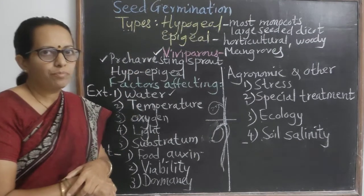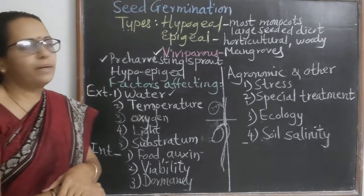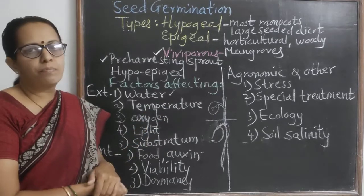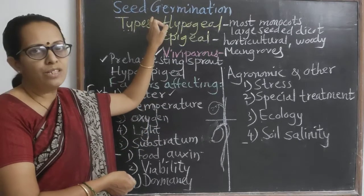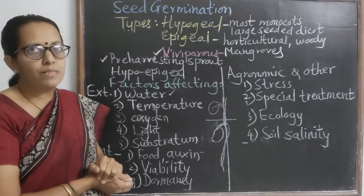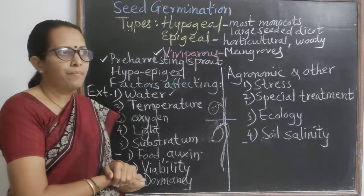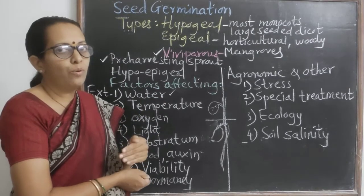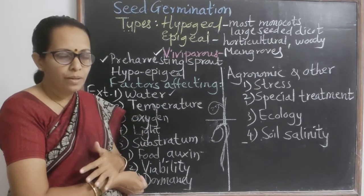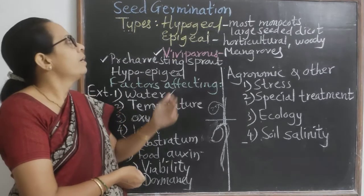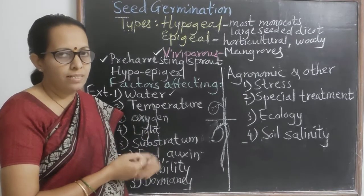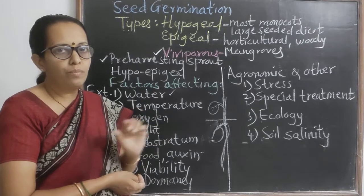Continuing with the next part of seed — that is seed germination — where germination means the process where the seed embryo is awakened. The embryo which is dormant for a certain period, by getting the favorable conditions, becomes active and sprouting takes place, which results in the formation of a new plantlet.